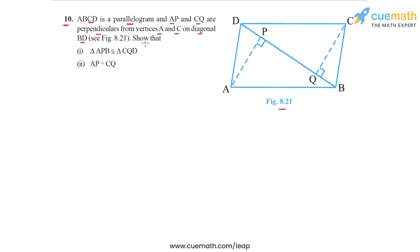We have to show that triangle APB is congruent to triangle CQD, and we have to show that AP and CQ are equal, the perpendiculars are equal.